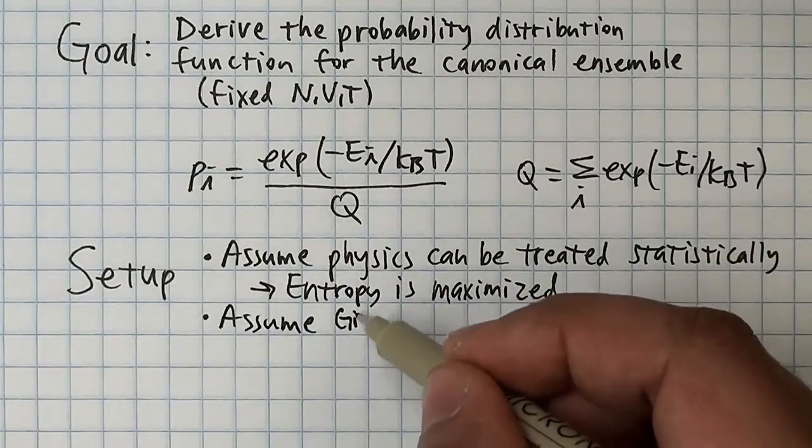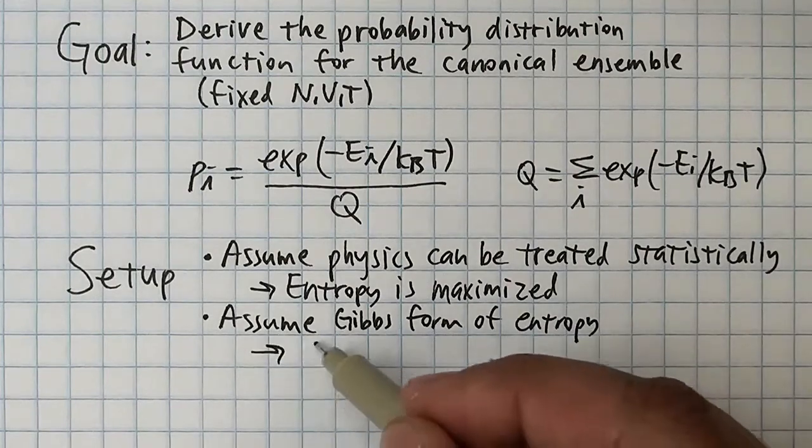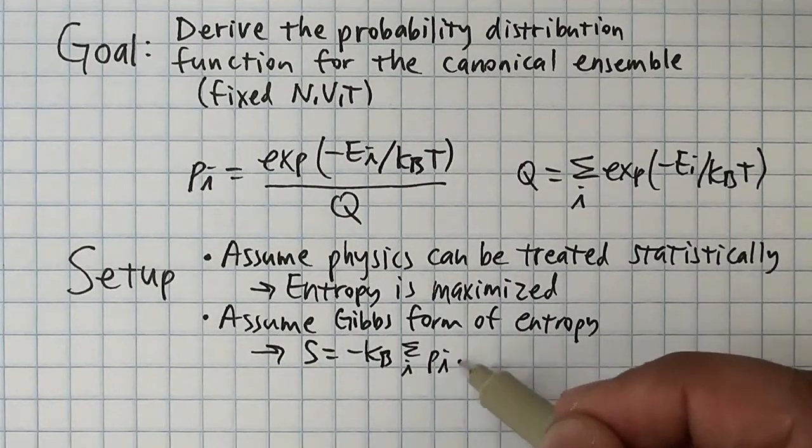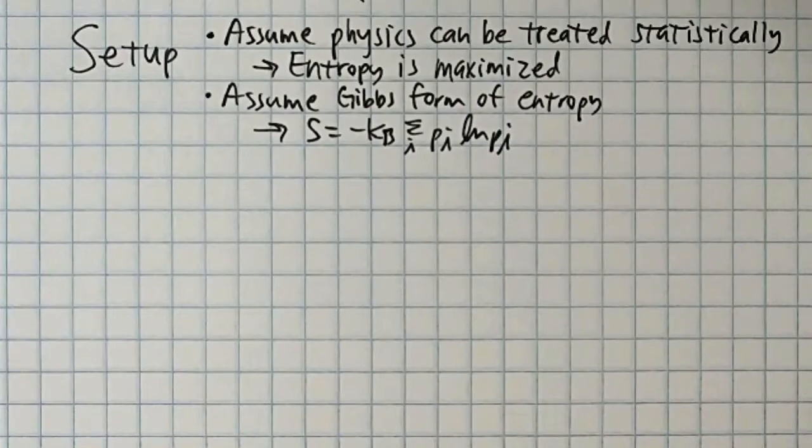Assumption number two is that entropy takes this form as written down by Gibbs. If you prefer, you can make three simpler assumptions to derive this equation, as described in video number one.